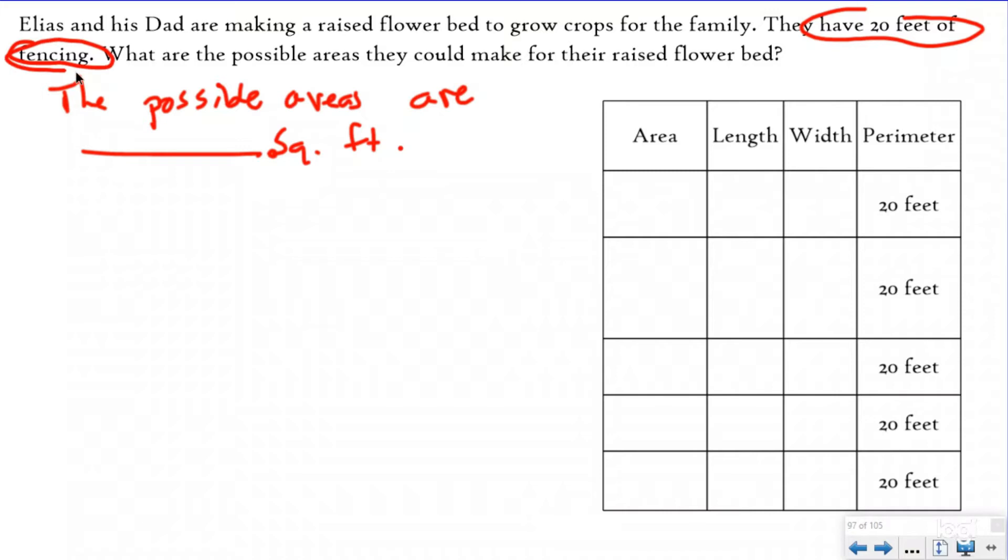It told me they have 20 feet of fencing. Fencing is very important - it's a keyword they love to use for perimeter because what do you do with a fence? You go around the edge of a yard or something. So when they're talking about 20 feet of fencing, they're saying the perimeter can be 20 feet.